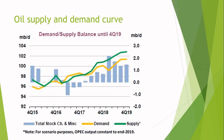Now, this is the oil supply and demand curve from the year 2015 to 2019. MB/D stands for million barrels per day, which is the unit on the Y axis. On the X axis, these are the years 2015, 16, 17, 18, and 19.